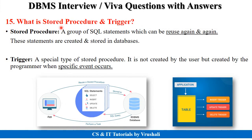The last question is: what exactly are stored procedures and triggers? A stored procedure is a group of SQL statements that you need to apply again and again in your code — for example, applying SELECT, INSERT, UPDATE, and DELETE repeatedly. A trigger is a kind of stored procedure that is not created by the user but is created by the programmer when a particular specific event has occurred. There are total three types of trigger: insert trigger, update trigger, and delete trigger.